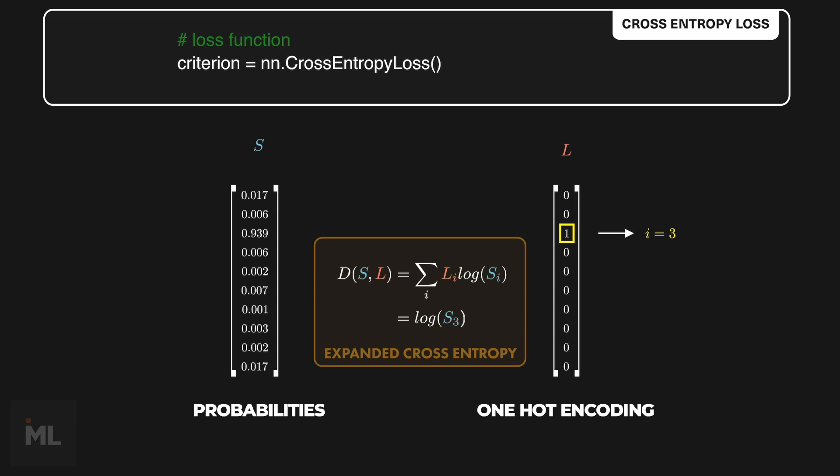Our other terms disappeared because of L_i equal to 0. So we only need to focus on one term on the model probability output, when i equals 3.